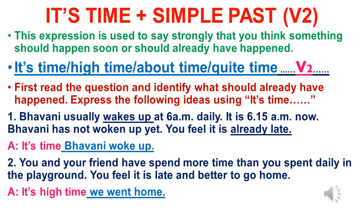In this video we're going to learn 'It's time' — a different expression. This expression is followed by a clause with simple past tense, meaning the verb must be in the second form. This expression is used to say strongly that you think something should happen soon or should already have happened.